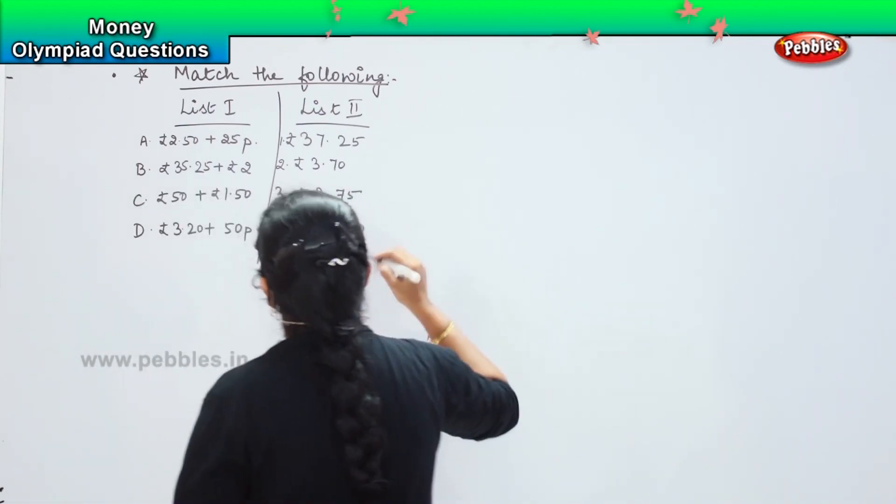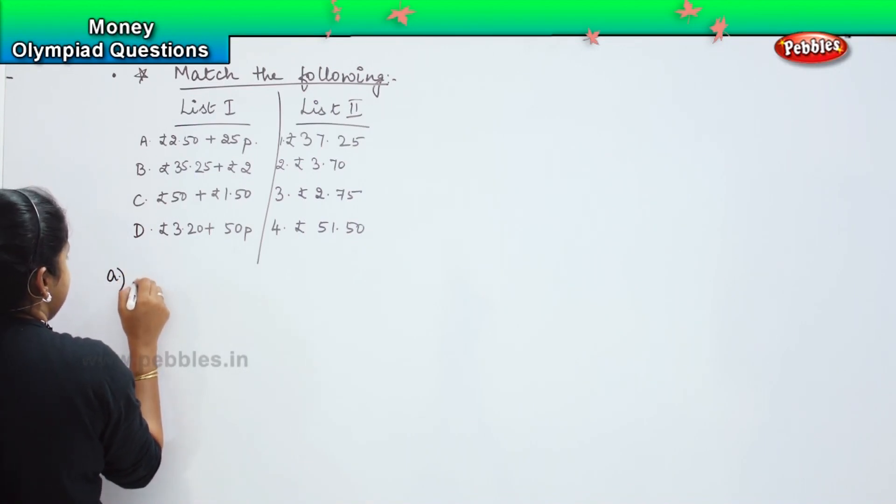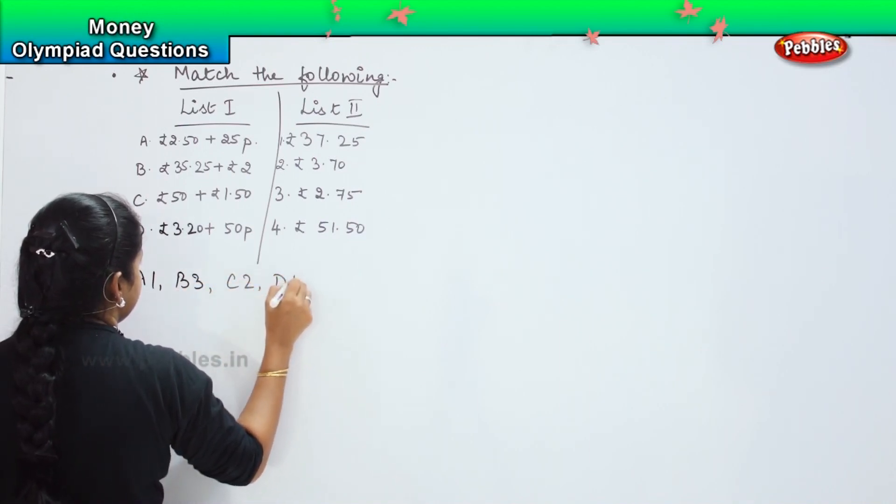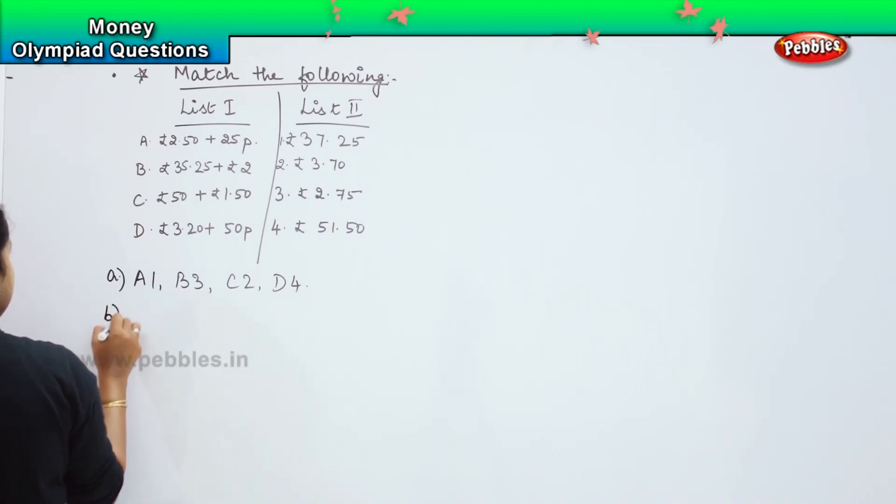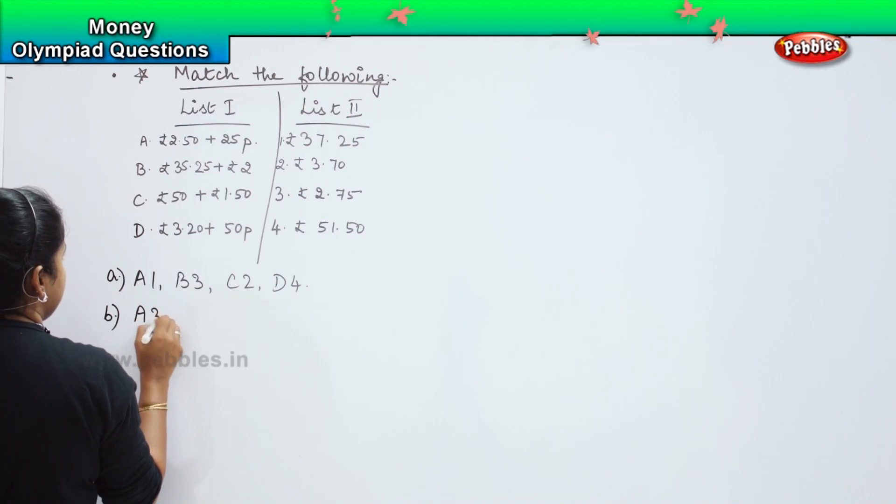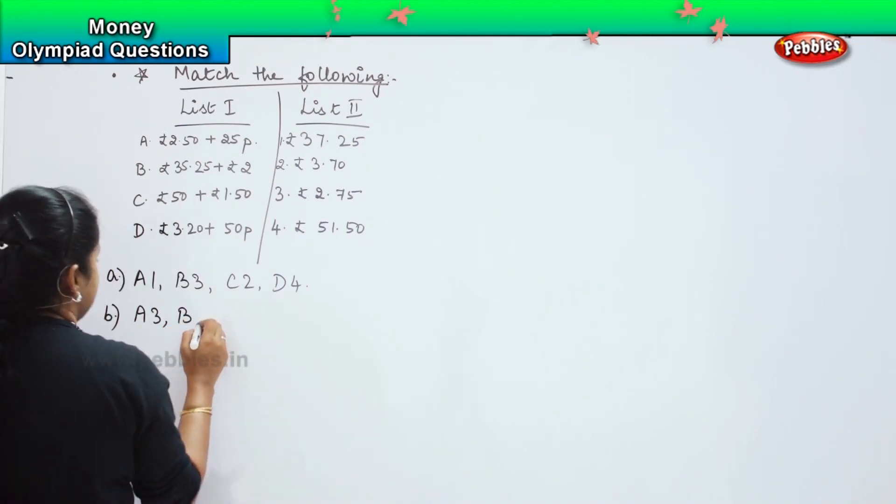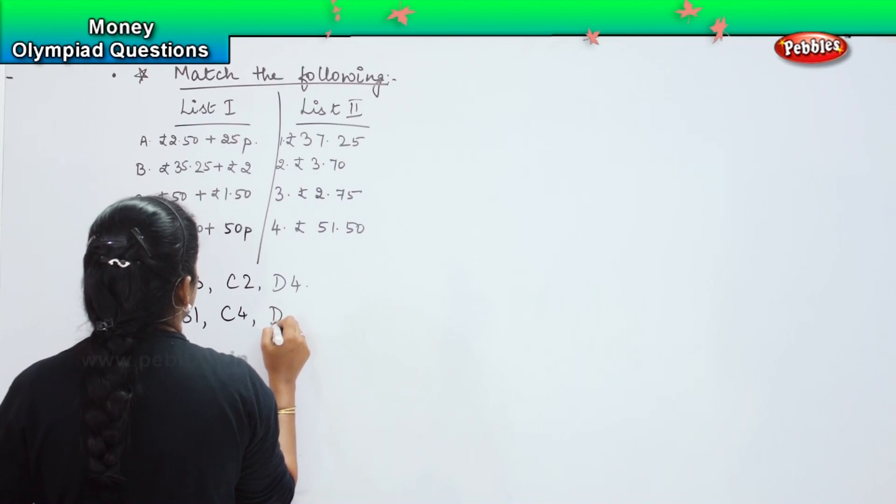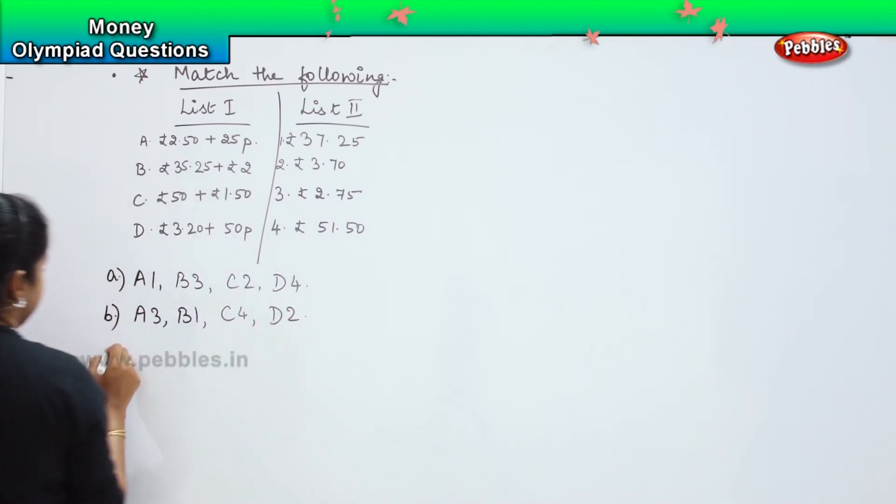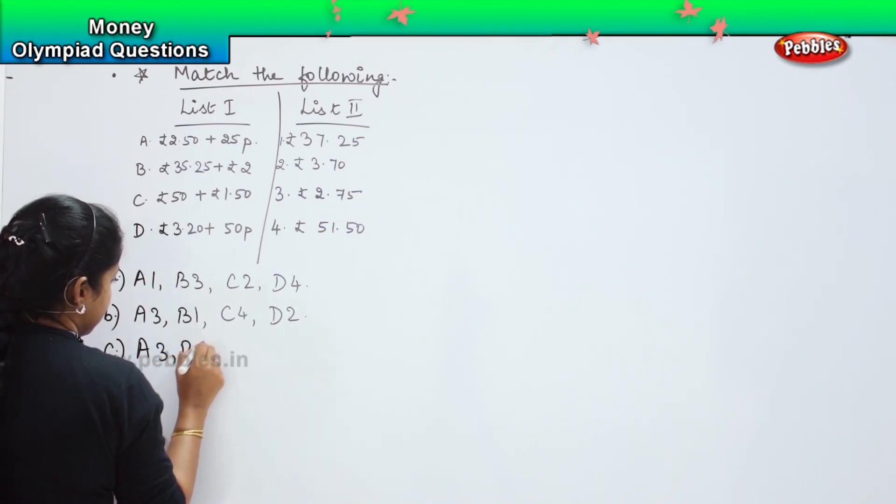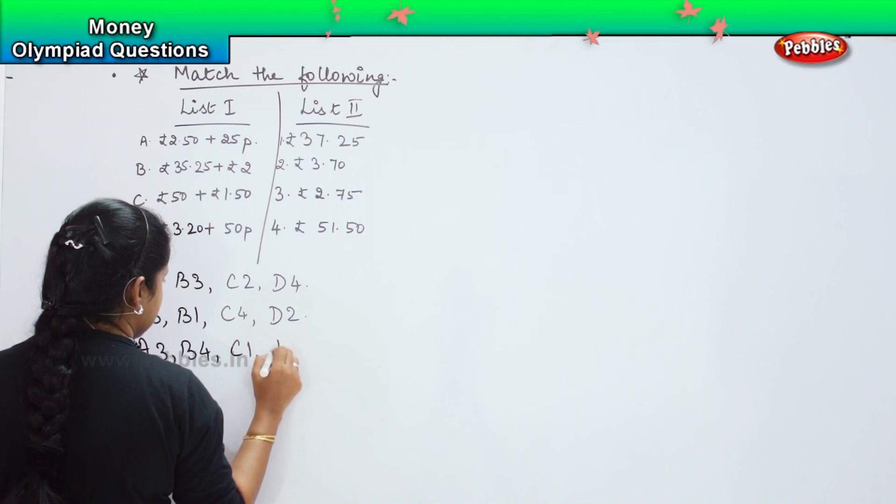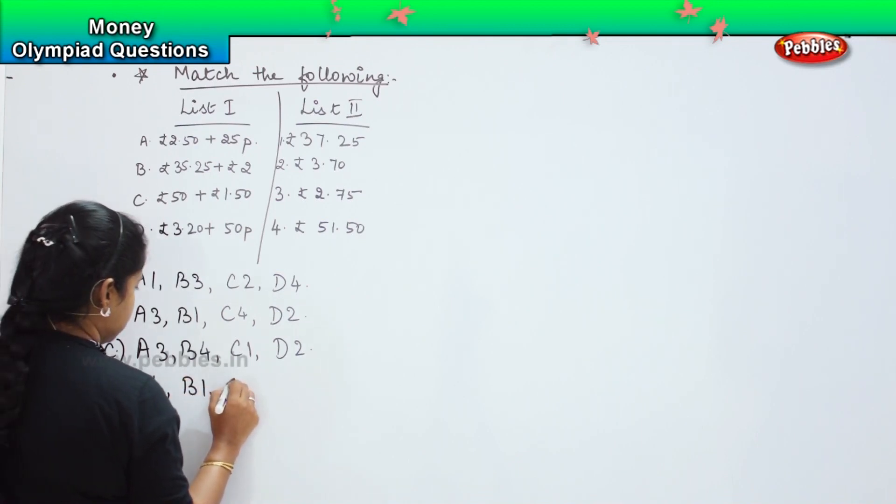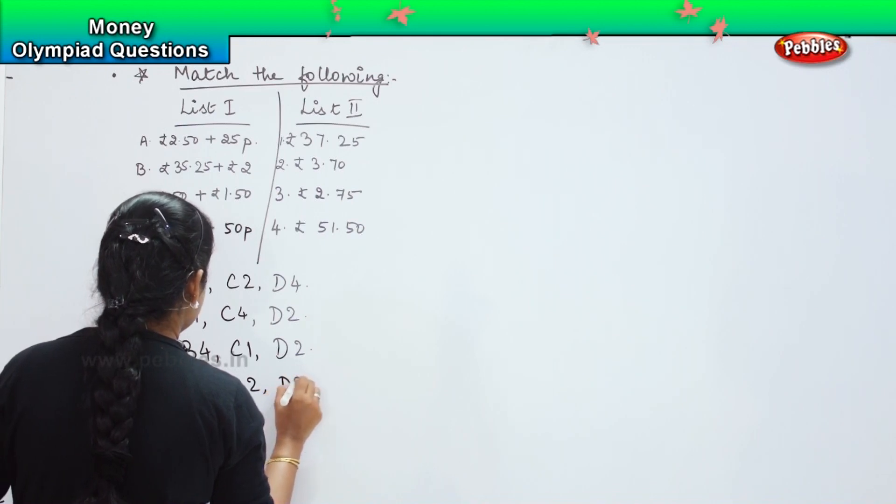And the options are: A2, B3, C4, D1; A1, B4, C3, D2; A3, B1, C4, D2; and option D: A4, B1, C2, and D3.